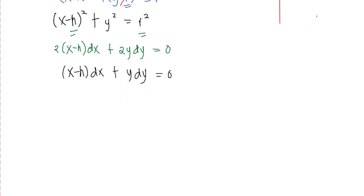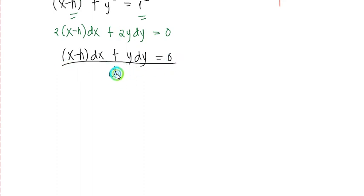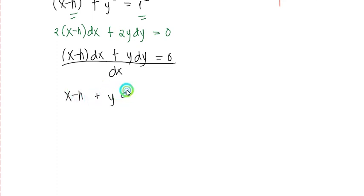Next, we divide the whole equation by dx in order to get the value of dy over dx, giving us x minus h plus y times dy over dx equals zero.